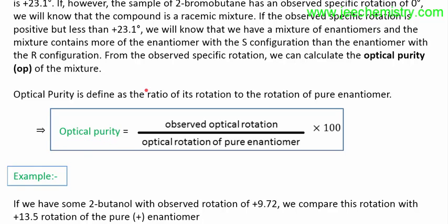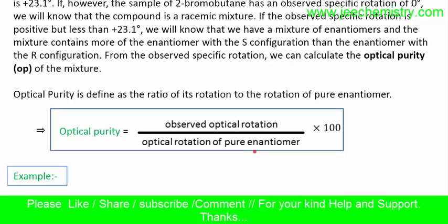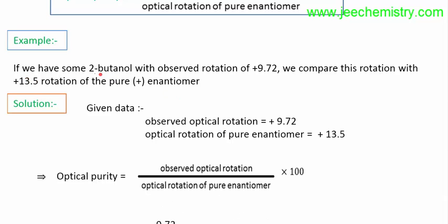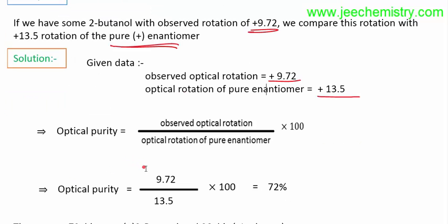The optical purity formula is: observed optical rotation divided by the optical rotation of the pure enantiomer. The pure enantiomer refers to either the plus or the minus form. If the observed optical rotation is positive, the compound is in the plus (D) form; if negative, it is in the minus (L, levorotatory) form.